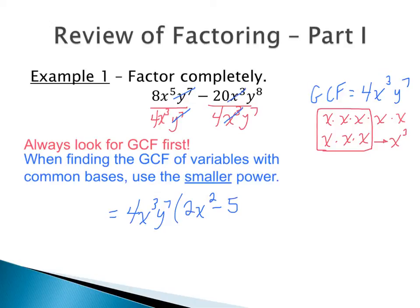y to the eighth divided by y to the seventh — 8 minus 7 is 1 — gives y to the first, or just y. So our final factored form is 4x to the third y to the seventh times the quantity 2x squared minus 5y. We can always check the answer by distributing to verify we get back to the original expression.